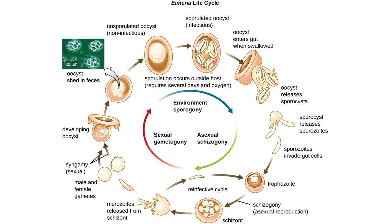There will be four sporocysts within an oocyst, and two sporozoites inside each sporocyst, resulting in eight sporozoites inside each oocyst. When you swallow the oocyst, it releases the four sporocysts, and then the four sporocysts release the two sporozoites each.